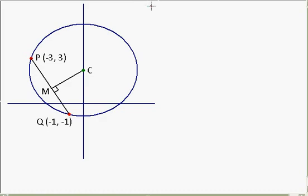Okay, so the line for P and Q. The gradient M is going to be the difference in the Y's, so 3 take away minus 1, and the difference in the X's. So, minus 3 take away minus 1.